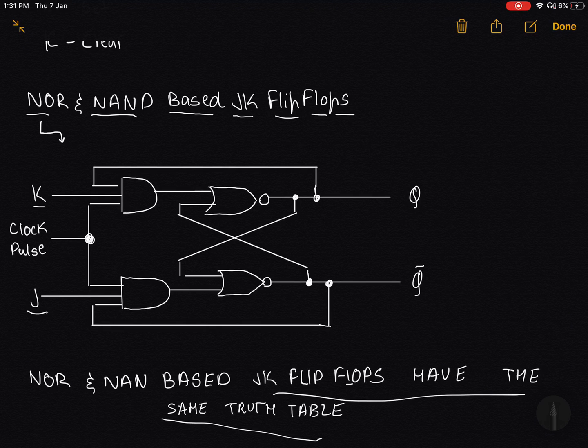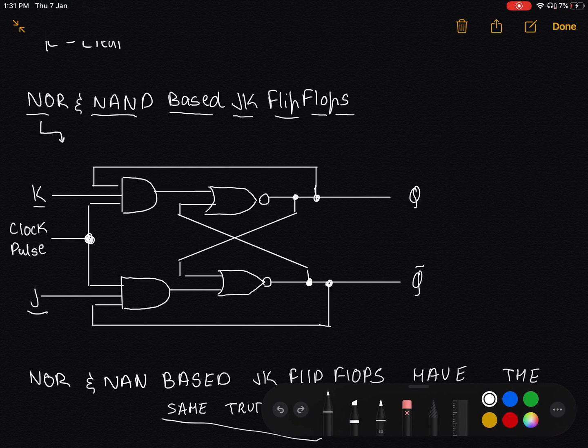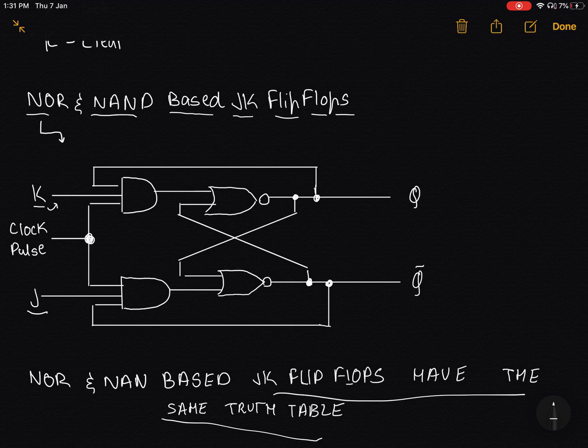J stands for set, K stands for clear. This is the input for J over here and K is over here. The clock pulse is used to synchronize the inputs. In here we have three inputs, whereas SR flip flops had just two inputs. We have J, K, and the clock pulse.